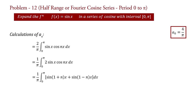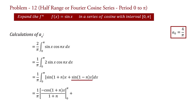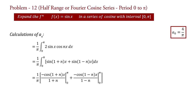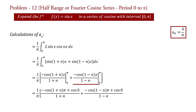Integrating, aₙ = (1/π) × [−cos((1+n)x)/(1+n) + (−cos((1−n)x)/(1−n))] from 0 to π. Substituting the limits: aₙ = (1/π) × [(−cos((1+n)π) + cos(0))/(1+n) + (−cos((1−n)π) + cos(0))/(1−n)].